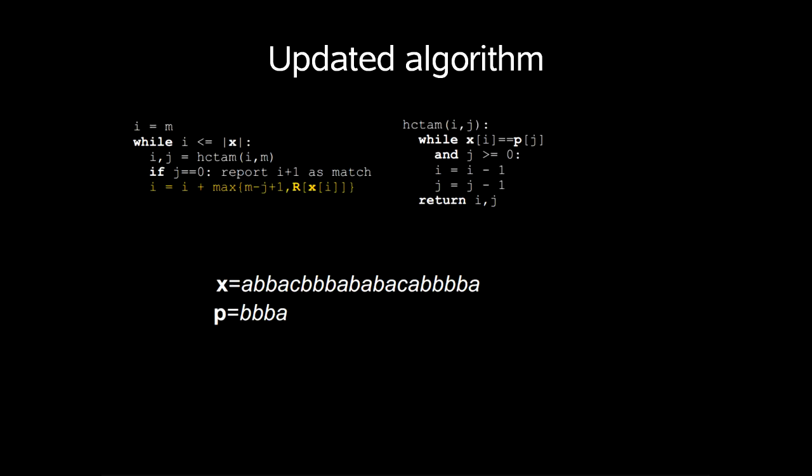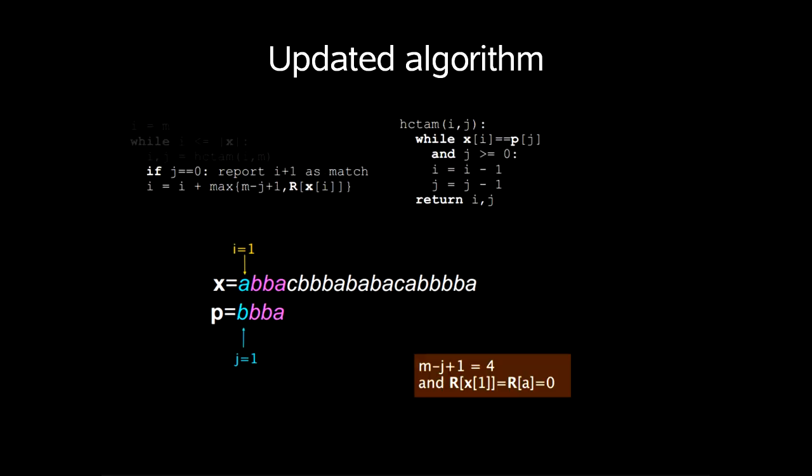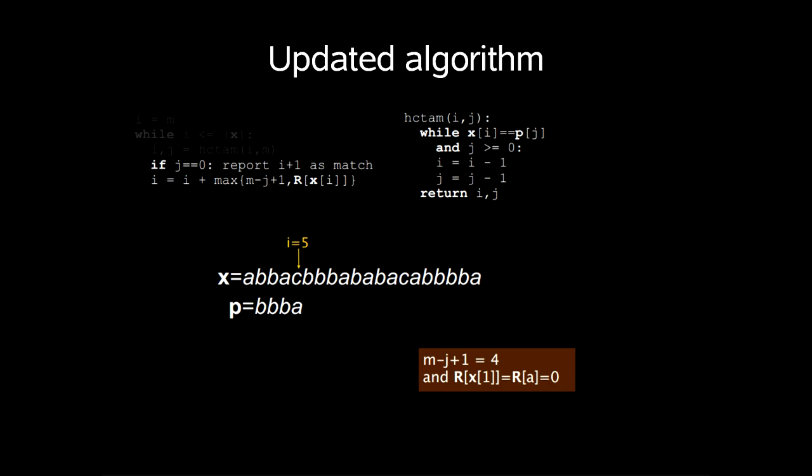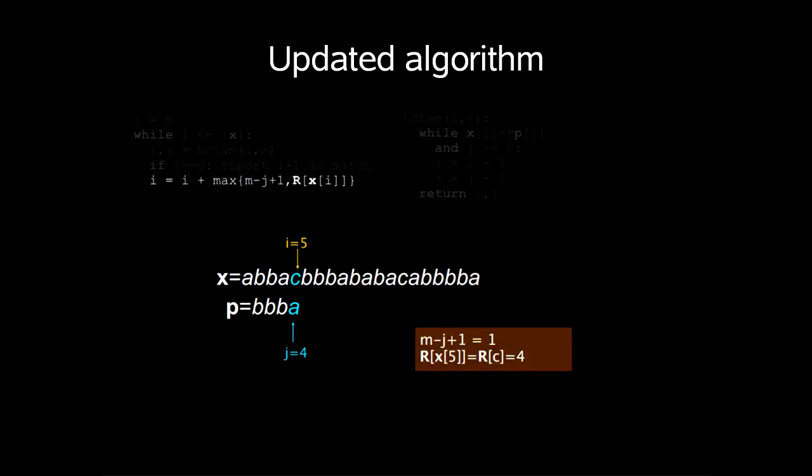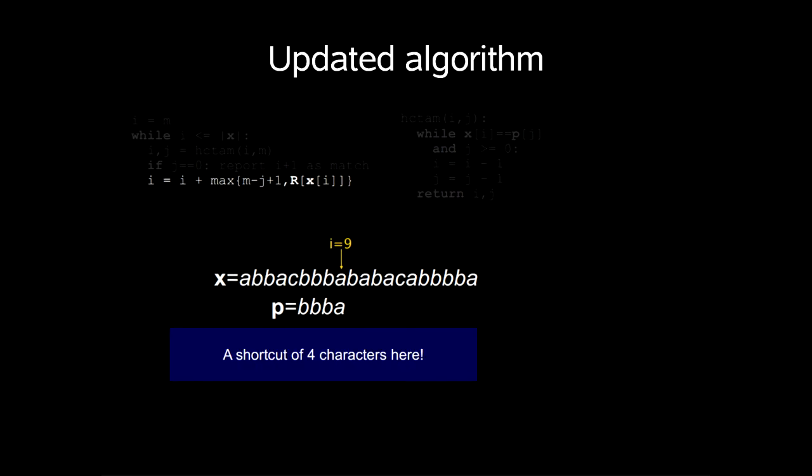If we update our algorithm with this, we follow these calculations and look up in r. After the mismatch at i equals 5, our lookup is 4, so we achieve a shortcut of 4 characters.